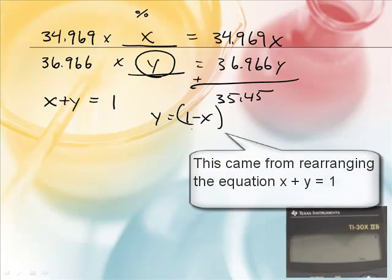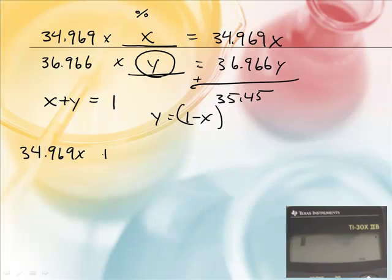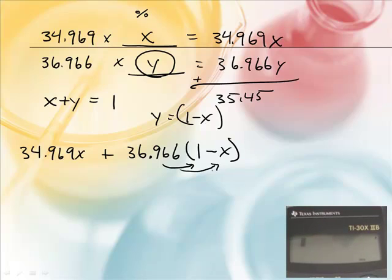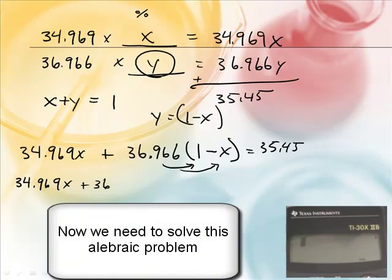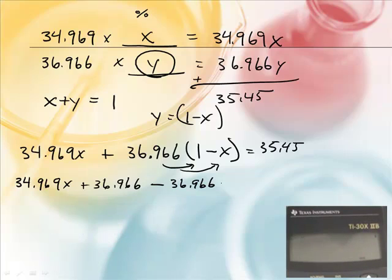So, let's plug that guy in to y. So, this is, guys, how we're going to do this. We'll take 34.969x plus 36.966 times the quantity one minus x. Now, because this, I need to distribute the 36.966 to both of these. This is an algebra thing. You guys have seen this before in your algebra class, so this should not be terribly hard. All right. Actually, I should say equals 35.45. Equals 35.45, because they'll have that up to the average. And then I'll say plus 36.966 minus 36.966x equals 35.45.